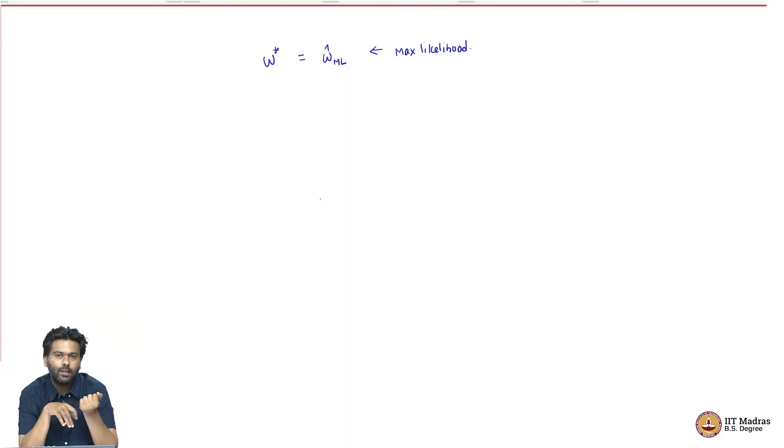Then we asked a question what else is the benefit of viewing this as an estimator, that is W hat ML is an estimator for W, and what other properties can we look at of this estimator that will help us gain some insights about this problem itself. And now, what we are going to look at is one nice property of this estimator which will give us some insights into extending the linear regression problem in a particular direction.